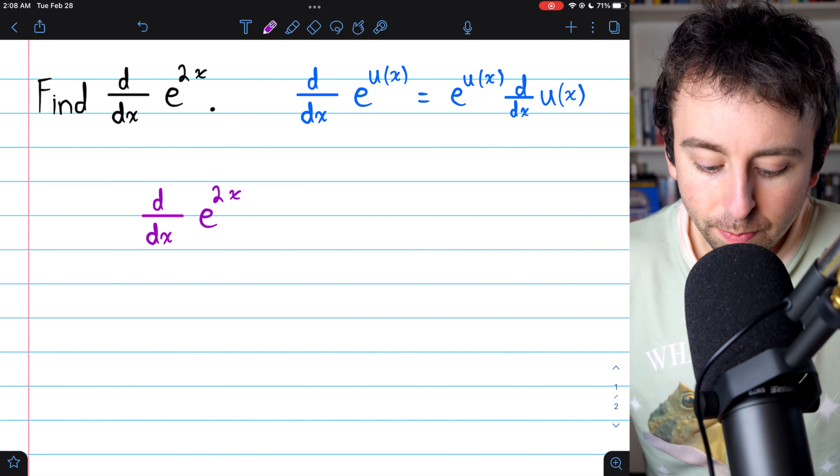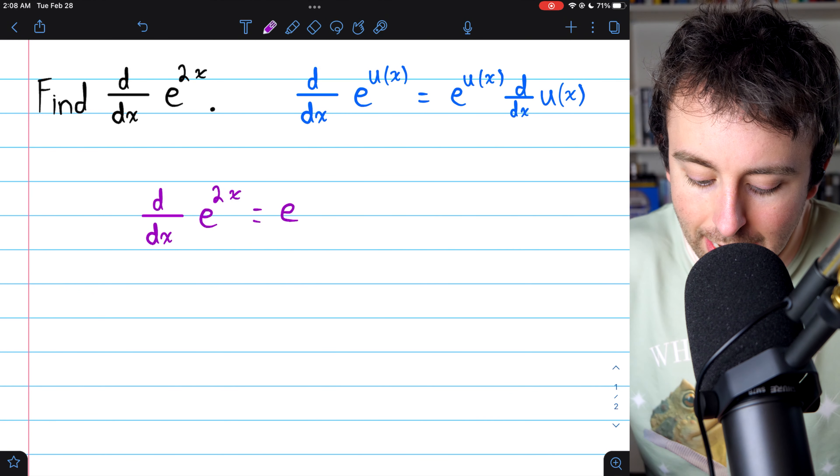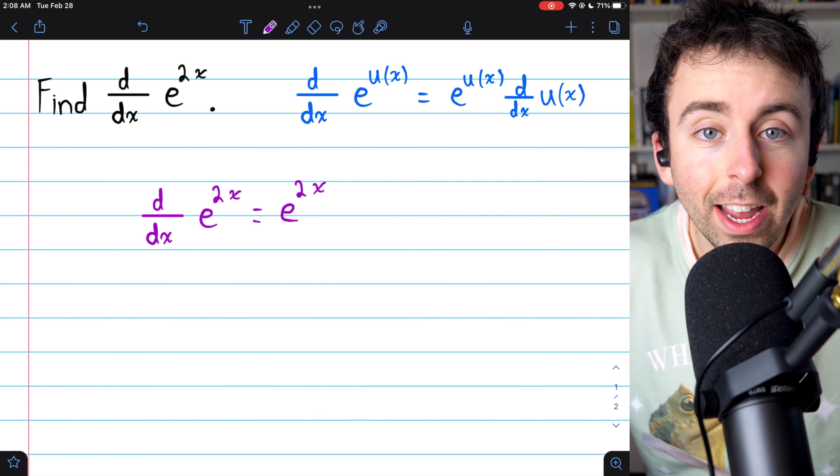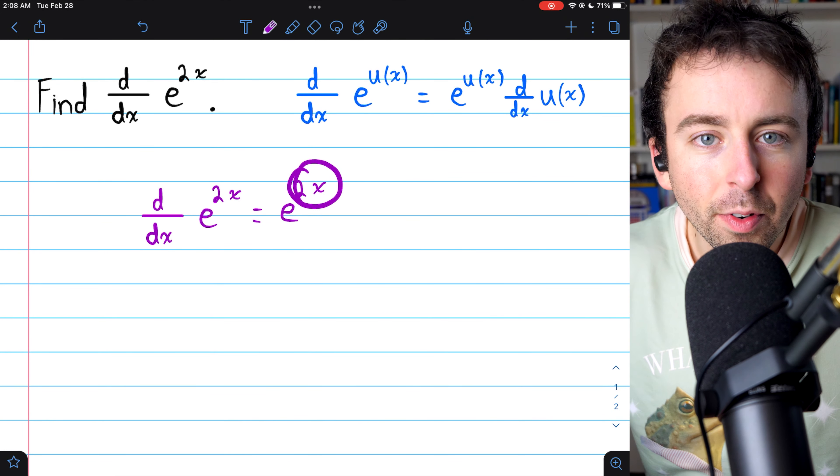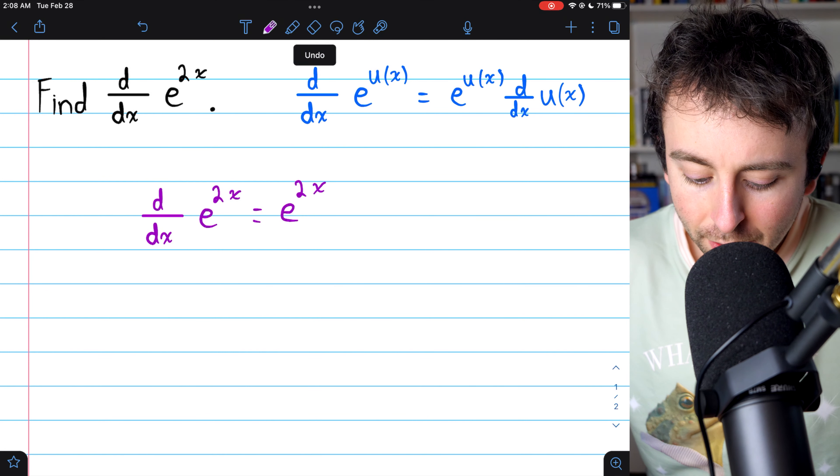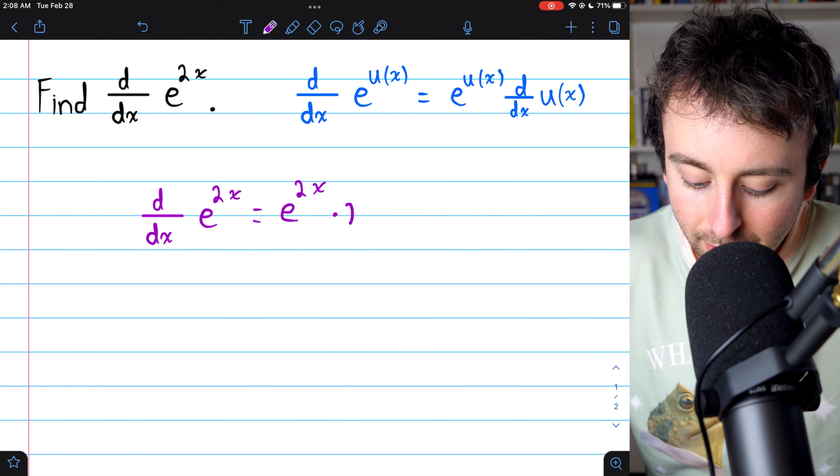So in this case, the derivative of e to the 2x would just be e to the 2x. That doesn't change, but then we need to multiply by the derivative of that inside function. It's just chain rule. The derivative of 2x, of course, is 2.